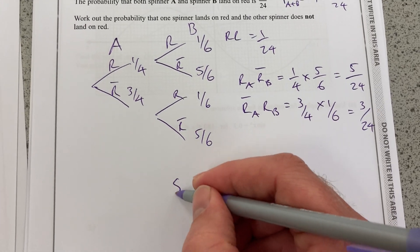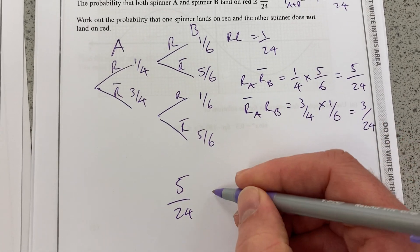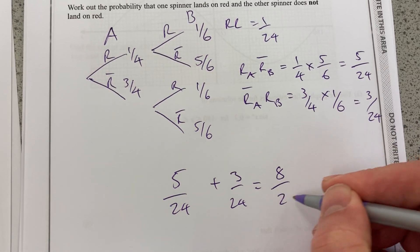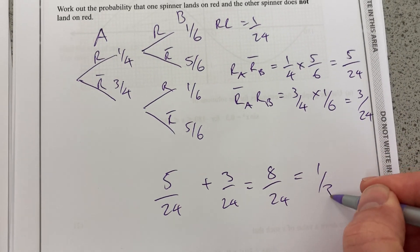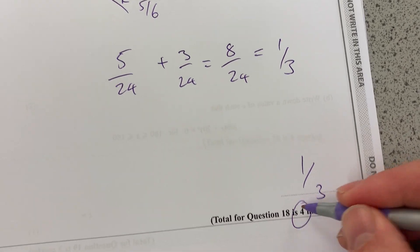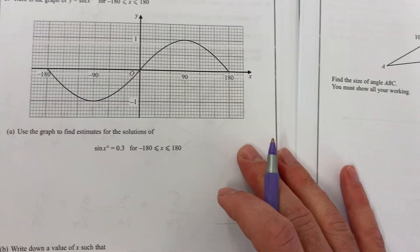So, now I want to do 5 over 24 plus 3 over 24, which is 8 over 24, which is 1 3rd. So, 1 3rd is my final answer there. A nice 4 mark question there. Let's move on to question 19.